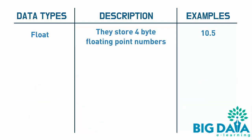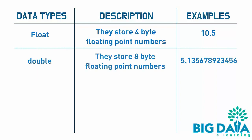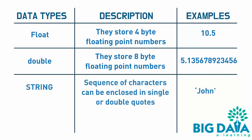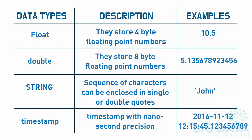Float: they store 4 byte floating point numbers. For example, 10.5. Double: they store 8 byte floating point numbers, with double precision — the example is highlighted. String: a sequence of characters that can be enclosed in single or double quotes. For example, John.